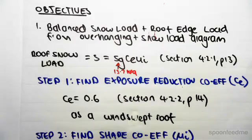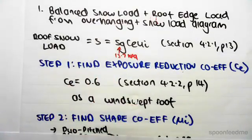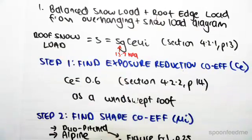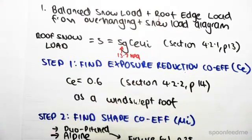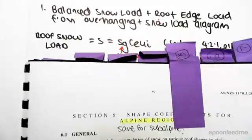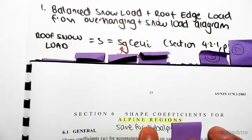shape coefficient, that's step two, okay, μ subscript i. So if we head across to figure 6.1 on page 25, so if we go to section 6 of the code, section 6, we're looking at shape coefficients for alpine